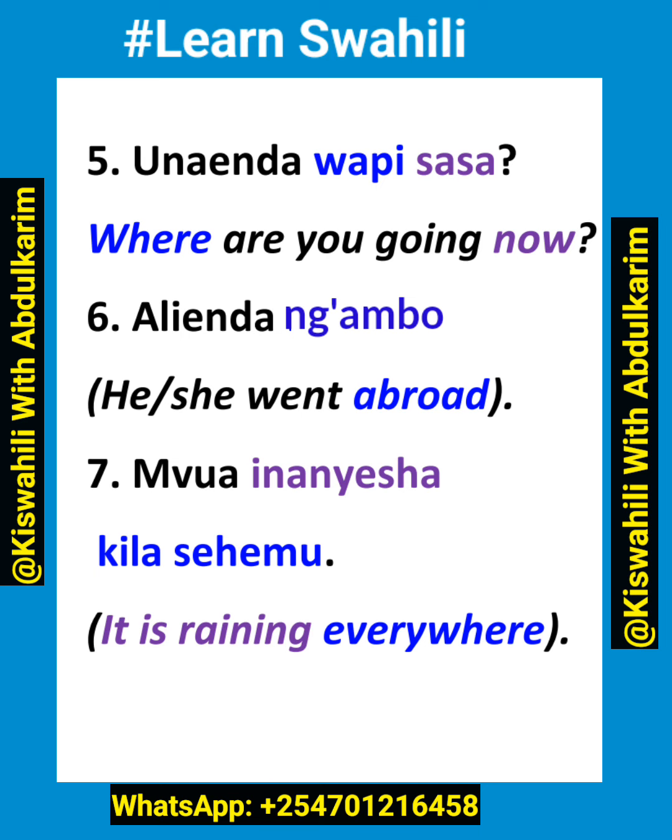Sita — alienda ngambo. He or she went abroad. We also have a slang word for ngambo which is maju. When you're in Kenya you can say alienda maju — it's slang, it means he went abroad.